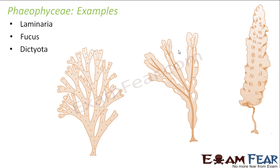If you look at all these three structures, even though they do not have a specific root, stem, or leaf, they give a branched appearance. You can see it looks as if there are some branches, and here it looks like some leaf-like structure. But nothing is well differentiated. That is why they are all known as thallus.